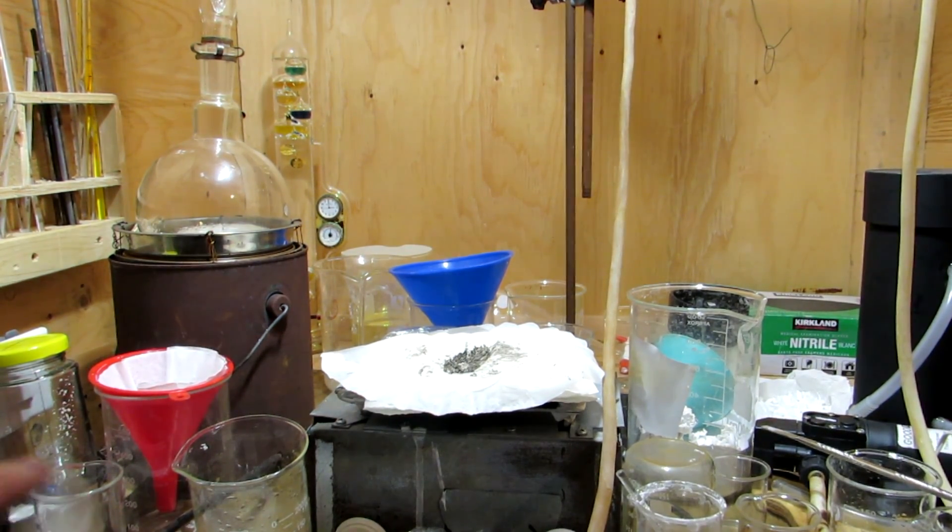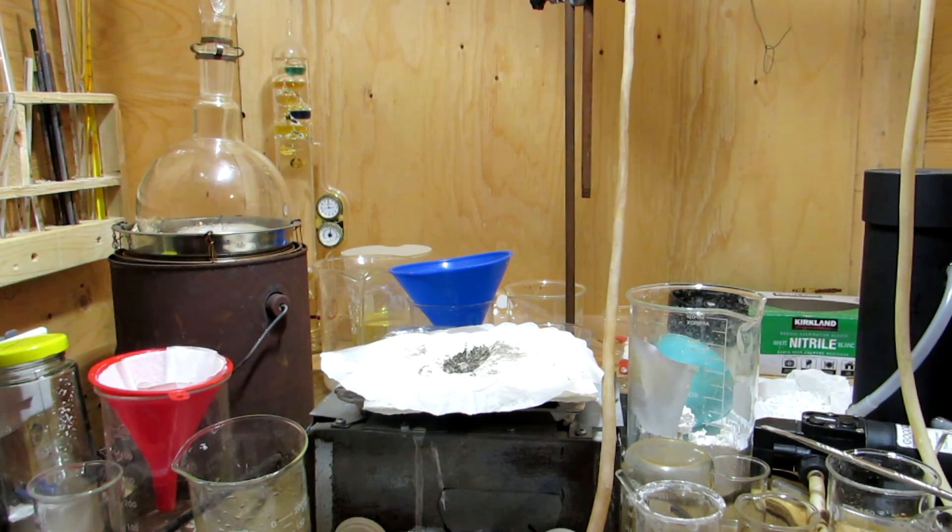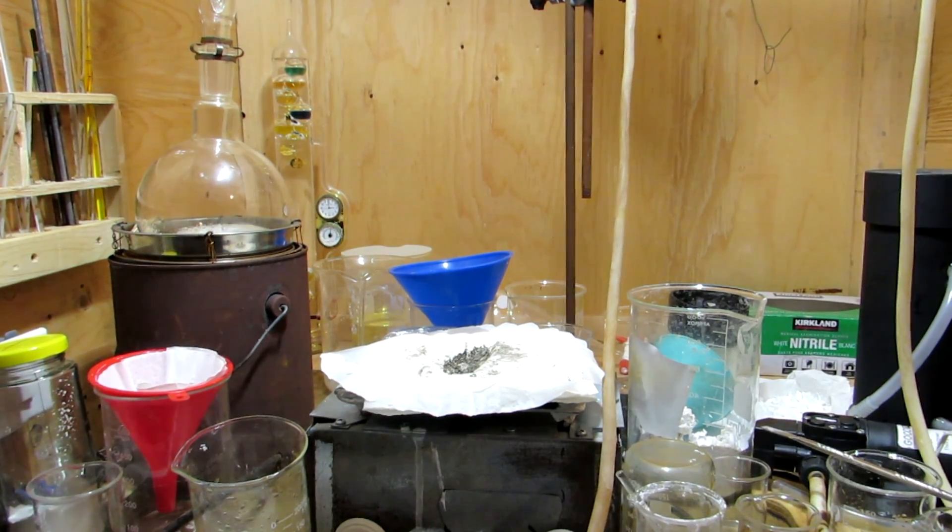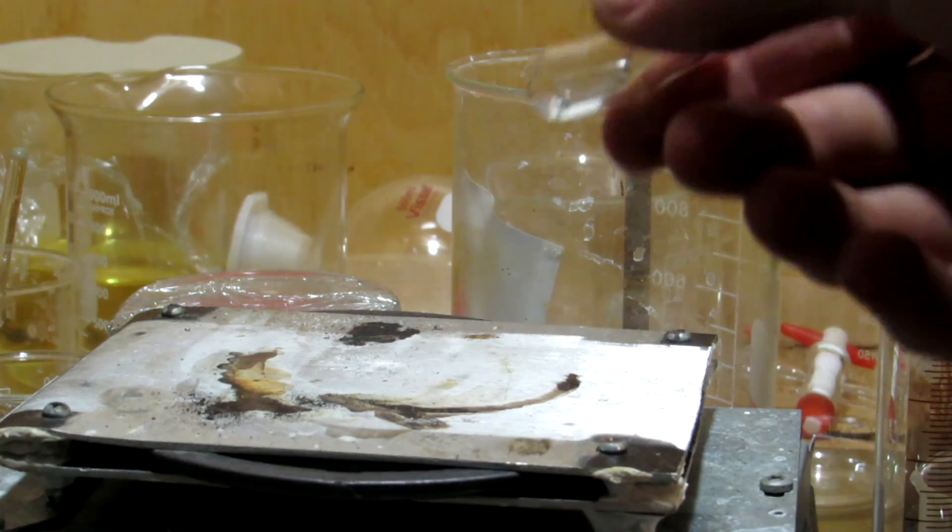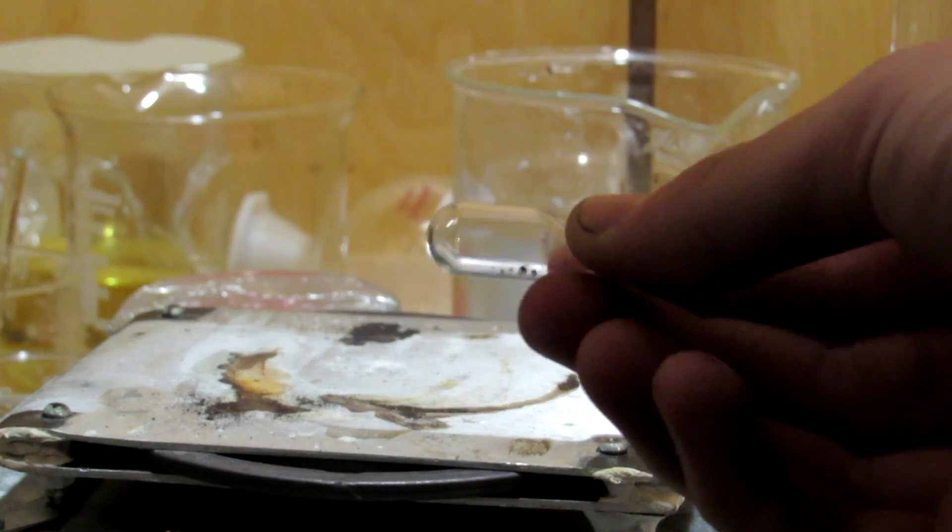There are some small blobs of thorium metal with some surface oxidation present in the residue, which had to be manually separated out. After removing the visible thorium pieces, the metal was sealed in an evacuated ampule to prevent atmospheric oxidation of the thorium.